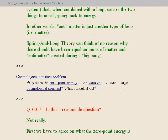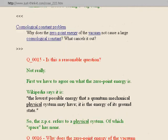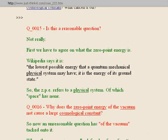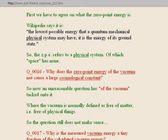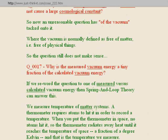Cosmological constant problem. Why does the zero point energy of the vacuum not cause a large cosmological constant? Is this a reasonable question? Not really. First, we have to agree on what zero point energy is. Wikipedia says it is the lowest possible energy that a quantum mechanical physical system may have — the energy of its ground state. The zero point energy refers to a physical system, of which space has none. The vacuum is normally defined as free of matter, i.e. free of physical things. So the question still does not make sense.